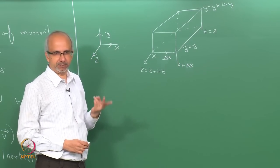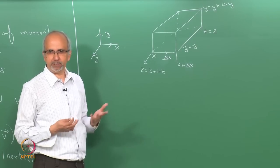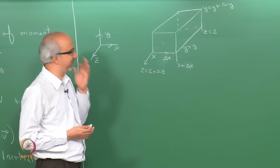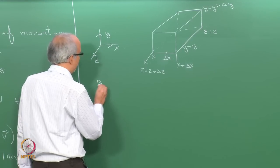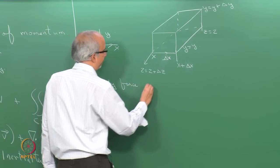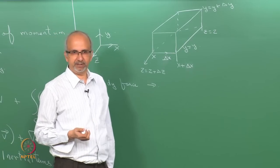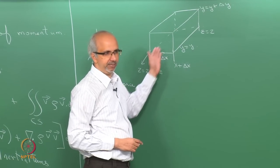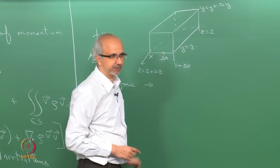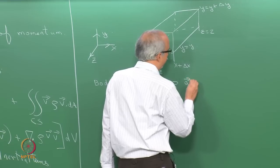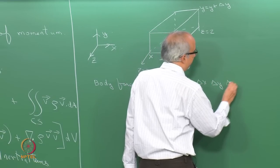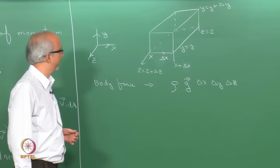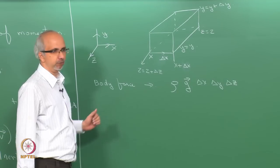The forces acting on the system are basically two kinds: body forces and surface forces. The easy one first — the body force is primarily because of gravity. The body force acting on this control mass is the density times the volume multiplied by the gravitational acceleration: rho times g times delta x times delta y times delta z. That is the body force acting on the system.